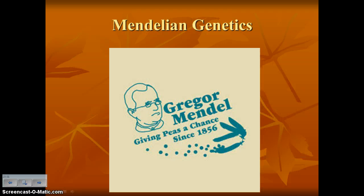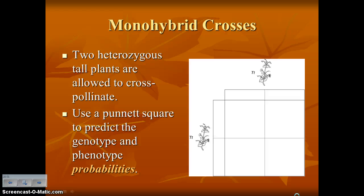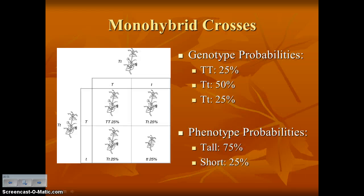There's a funny picture of Gregor Mendel — 'giving P's a chance since 1856.' The last thing we'll talk about are Punnett squares, which let us illustrate how traits can be passed from parent to offspring — what combination of alleles you can get based on the genotypes of the parents. Here's a Punnett square for two hybrid parents (big T, little T), showing the percentages of phenotypes and genotypes. We'll go over this in class.